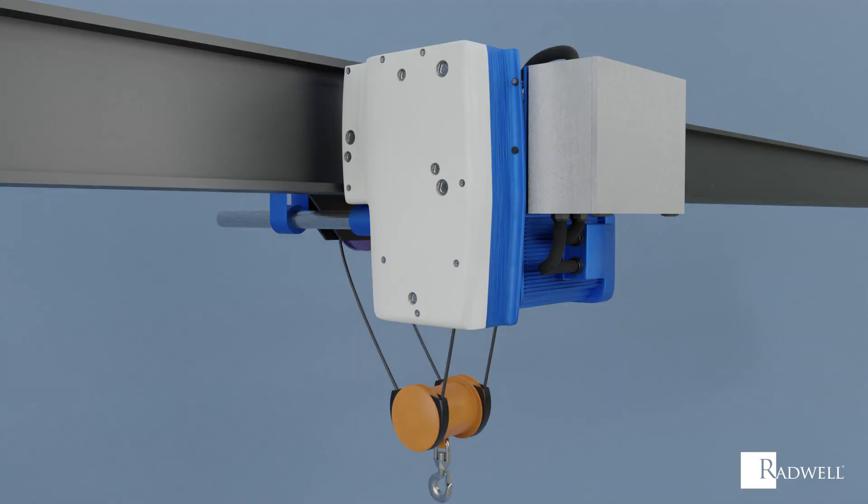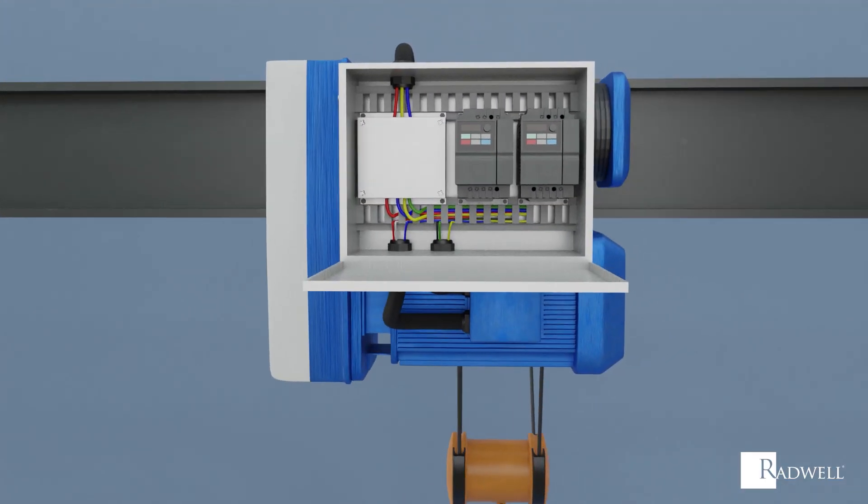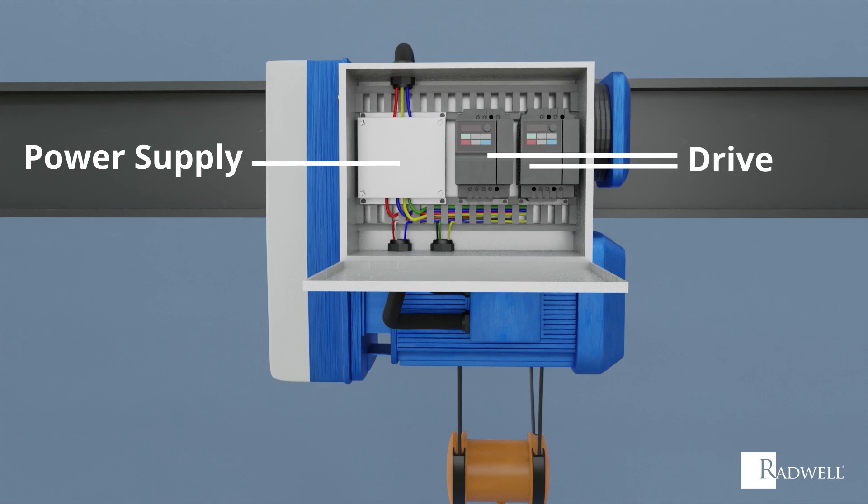First, let's review the main components of regenerative braking. First is the power supply, which supplies power to the system. Second is the drive, which controls the motor. Third is the motor, which moves the machinery.